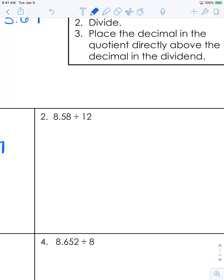The next one: 8.58 divided by 12. 12 cannot go into 8, but it can go into 85, and it goes into 85 seven times. 7 times 12 is 84. We're going to subtract and bring down. 12 goes into 18 one time.